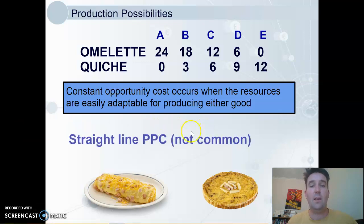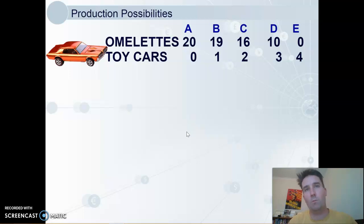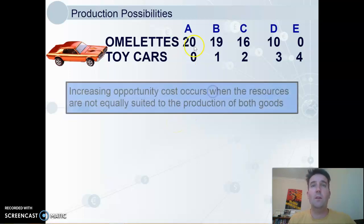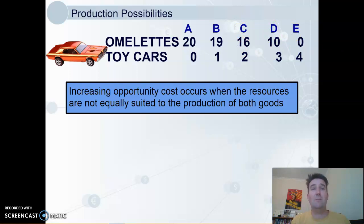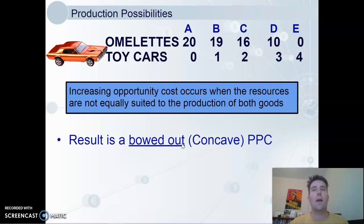Back to a more common example: omelettes and toy cars. These goods share very few resources, obviously. So as we move from A to B, we only forego one omelette, because we aren't using many of the good omelette-making resources. Moving further along, we give up more omelettes, as now we're using our best omelette-making resources to make the toy cars. Opportunity cost increases as we make more of either good. This gives us our bowed-out or concave production possibilities curve — this is what we consider normal.